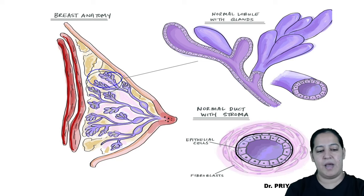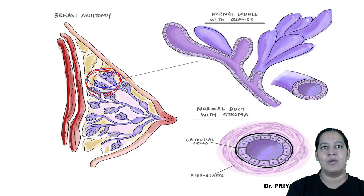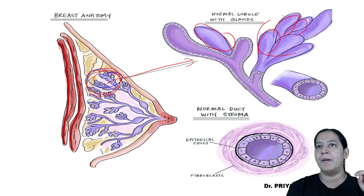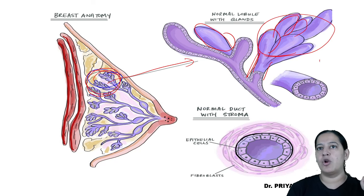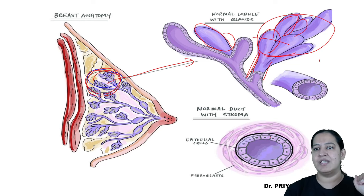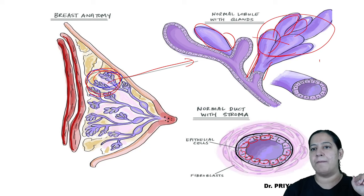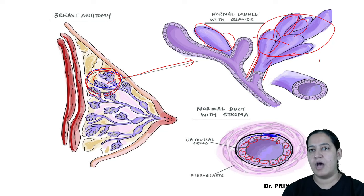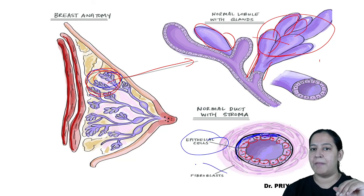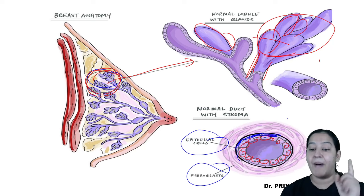Let me zoom in on this diagram. These are ductules — one, two, three. Multiple ductules opening in one terminal duct — this is one lobule or one TDLU. See the lining. Let me cut it out and show you. It is bilayered. This is the inner layer — epithelial, marked in red. And this is the outer flattened layer — myoepithelial. So epithelial is inner and myoepithelial or fibroblast is outer. All of them are bilayered.